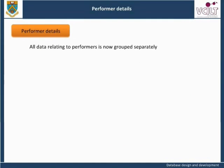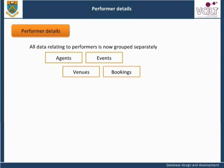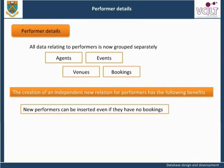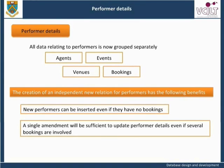Performer Details: All data relating to performers is now grouped separately from agents, venues, events, and bookings. The determinacy diagram for performer details gives us a performer relation in second normal form. The primary key for the performer relation is performer ID, and the other attributes are name, performer type, fee, and location. New performers can be inserted even if they have no bookings, and a single amendment will be sufficient to update performer details even if several bookings are involved.